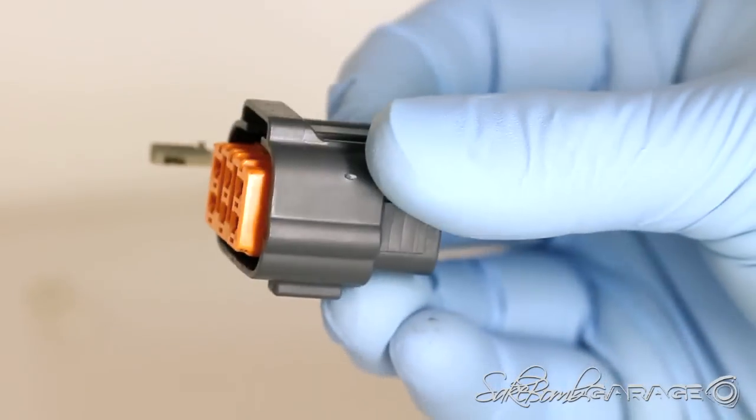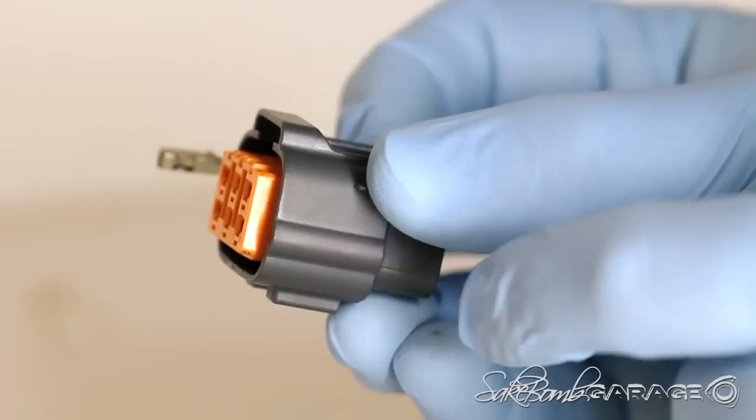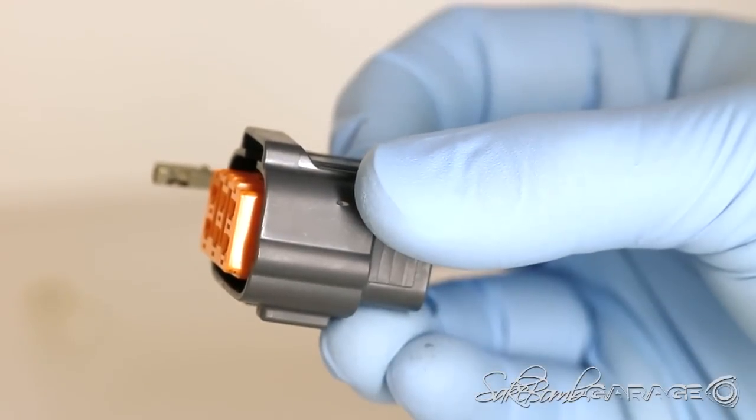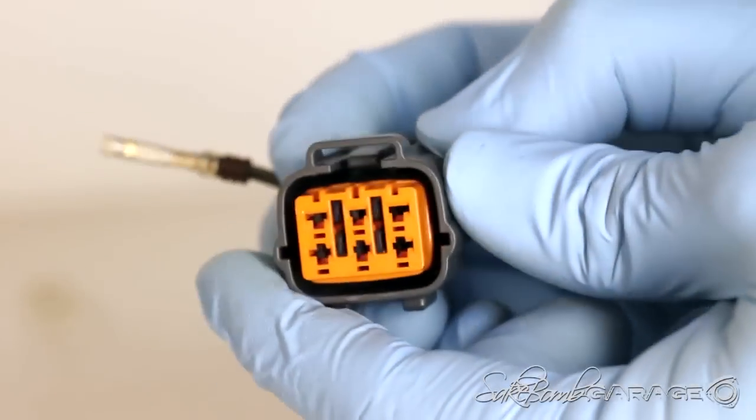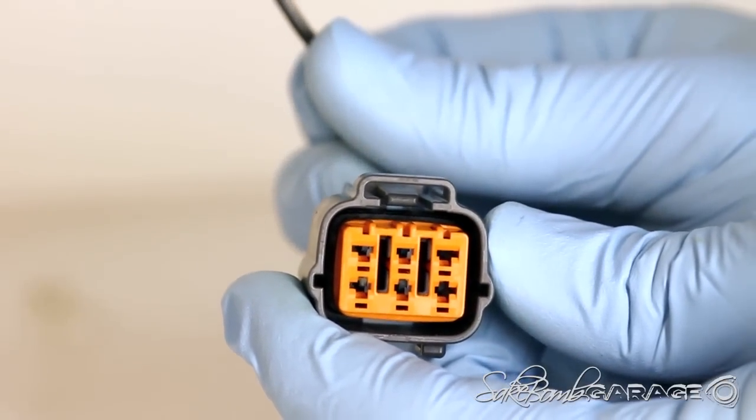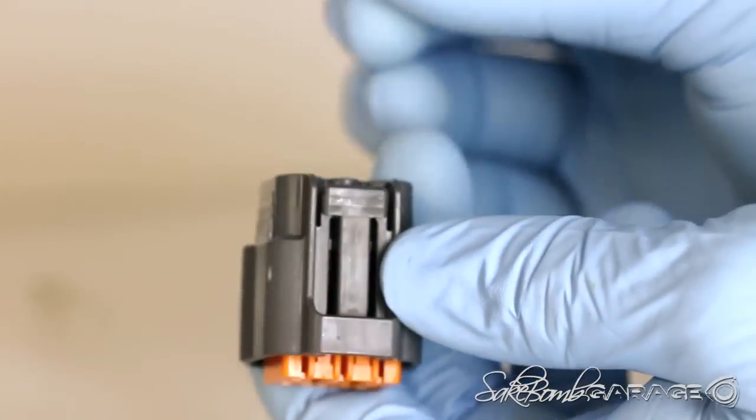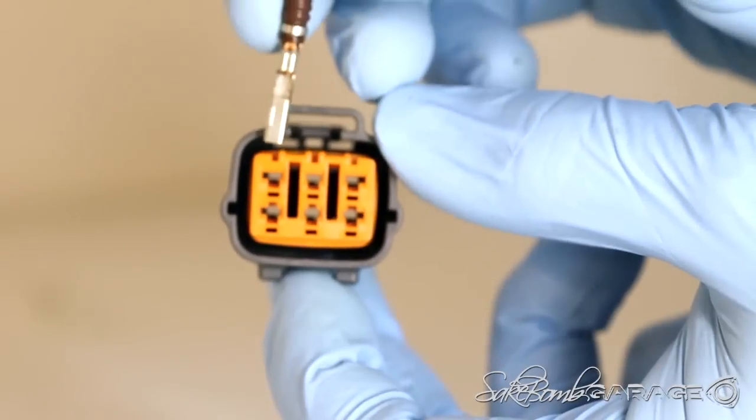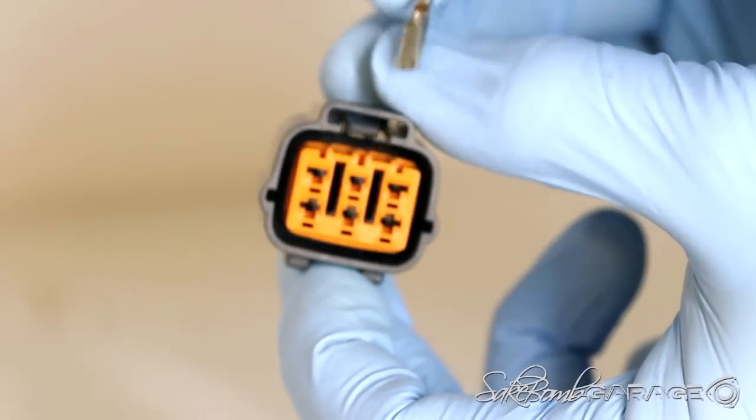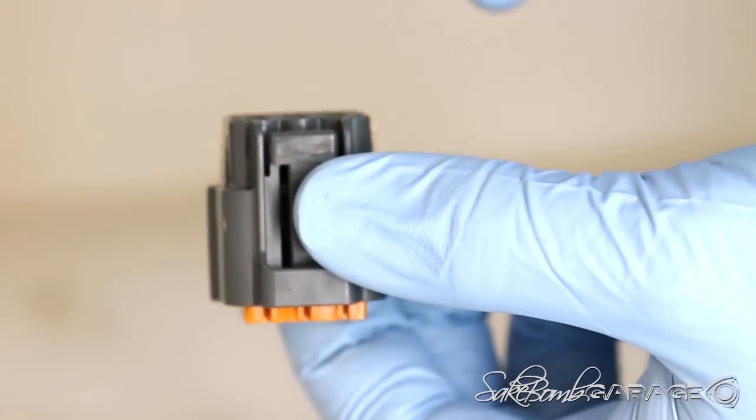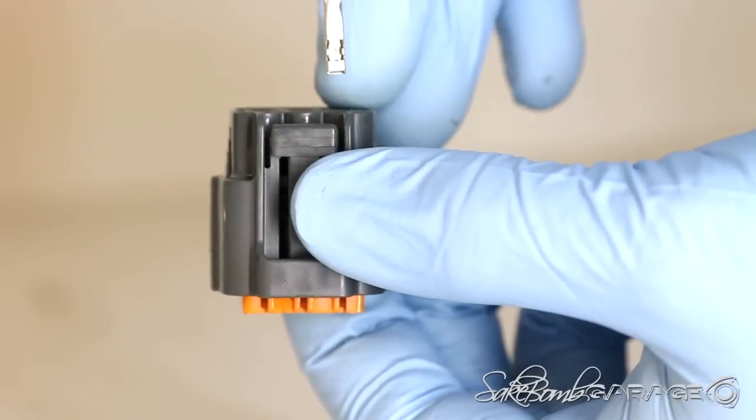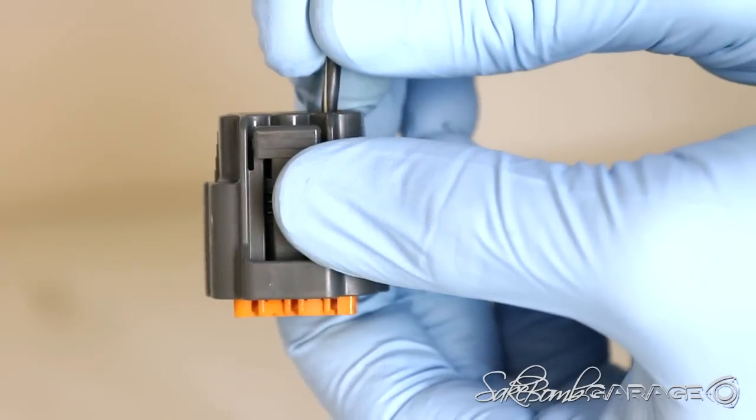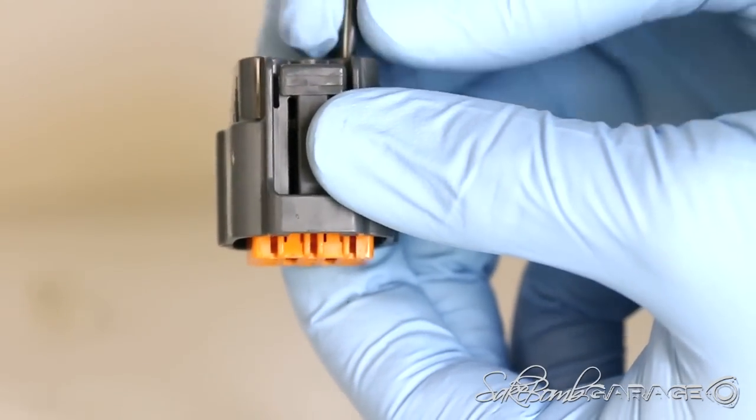When you receive your Sumitomo connector, you'll notice that this orange pin separator sticks out. Be sure not to push it in at this step, not until we're done pinning. So with this first black and white stripe wire, we need to feed it in to the rear of the Sumitomo connector in the number three position, which is one, two, three on the top side. So coming in the back with the pin in this orientation right here, it can only go in one way. Slide it straight in until you get the click. That's your first one in.